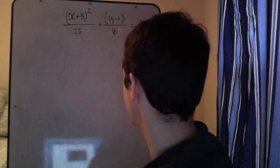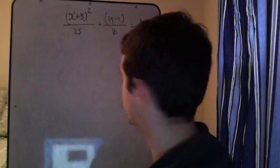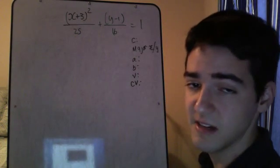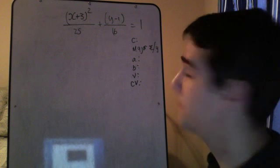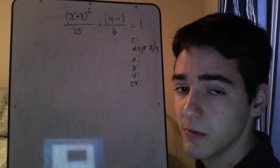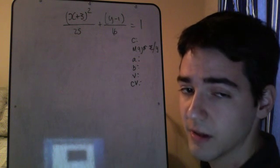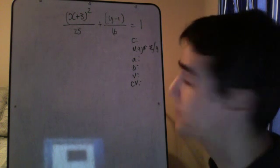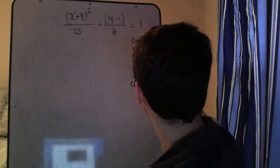Your vertex, I'm going to call that V. And your co-vertices, which is, I'm going to call that CV. Okay. Get all that. And once you have all this information, then we can go ahead and plot everything. And we'll get the foci in a minute.